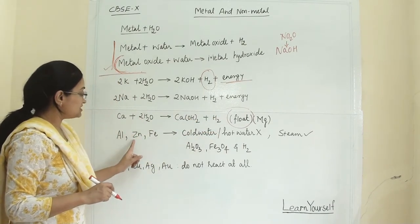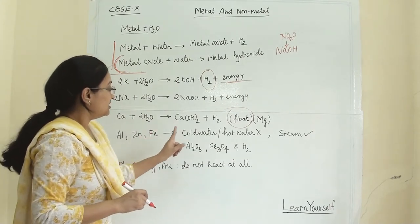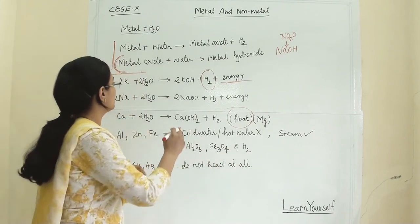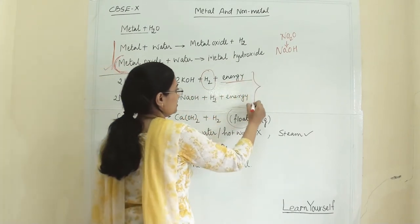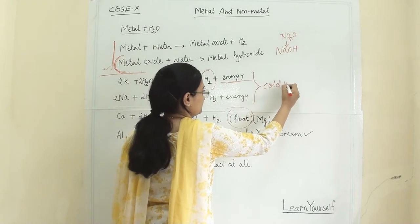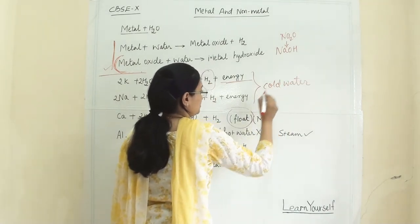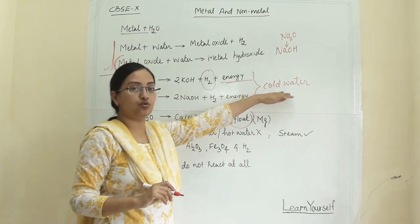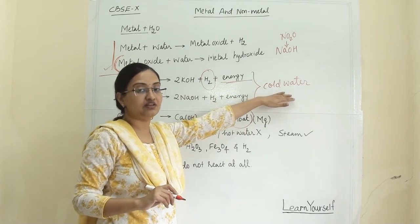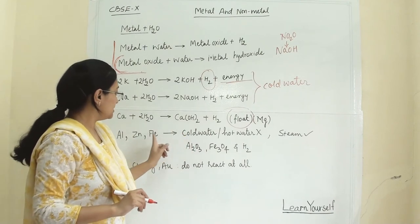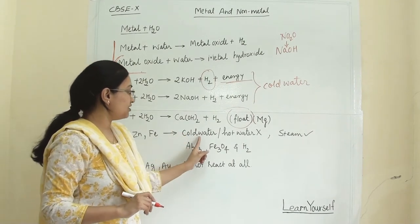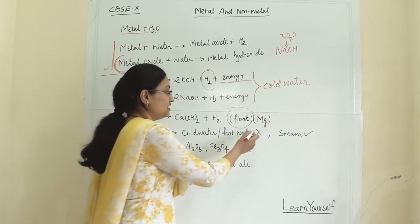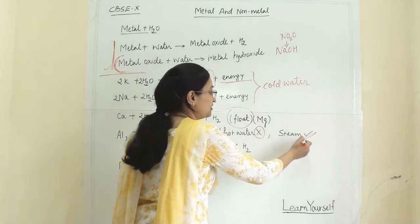Aluminium, zinc, and iron will not react with cold water and will not react with hot water either. They will only react with steam. When they react with steam they produce aluminium oxide, iron(III) oxide, and hydrogen gas.